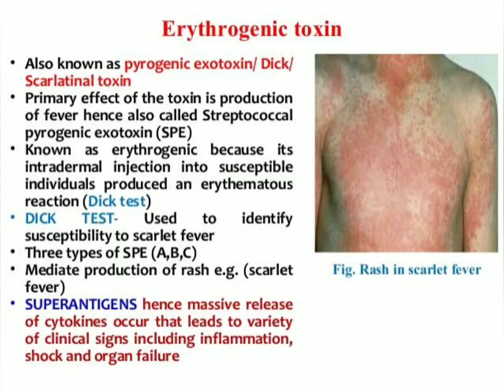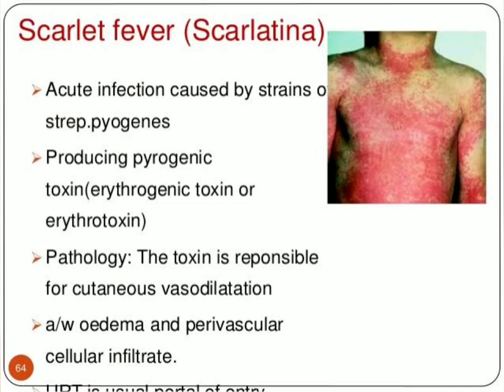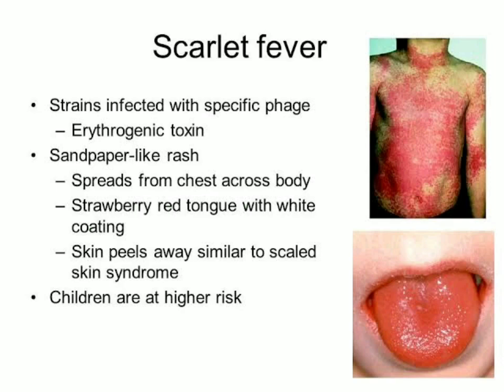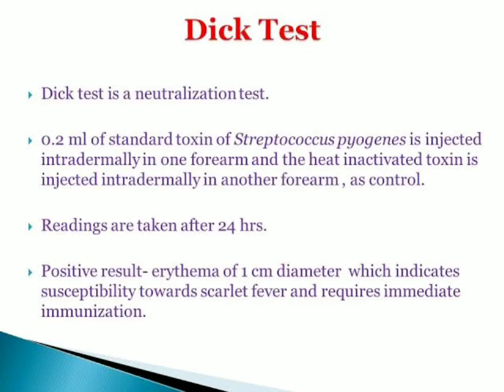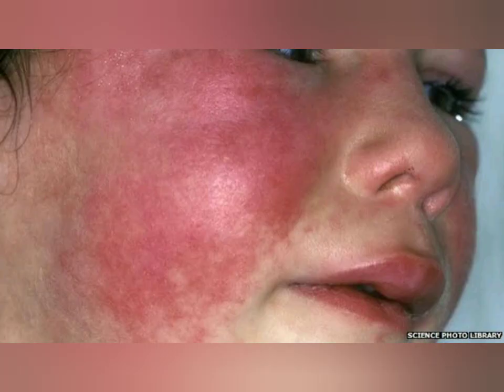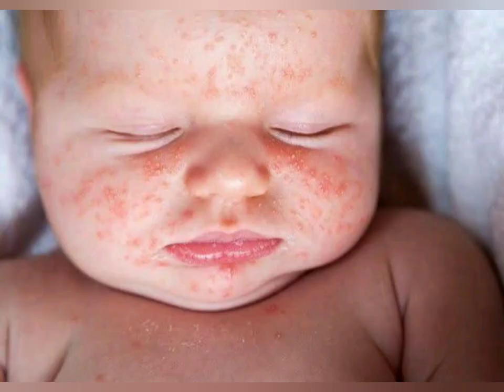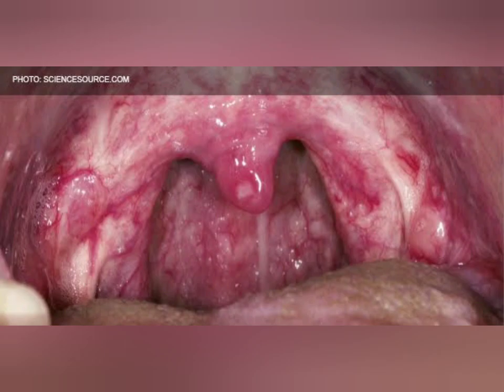Toxins of streptococci include the pyogenic, erythrogenic, or scarlatinal toxin. This toxin, when injected, produces an erythematous reaction called the Dick test. This test is used to identify children susceptible to scarlet fever — a type of acute pharyngitis with extensive erythematous rash caused by Streptococcus pyogenes.